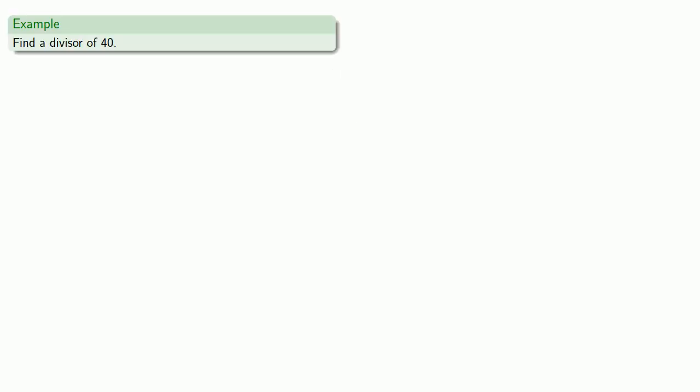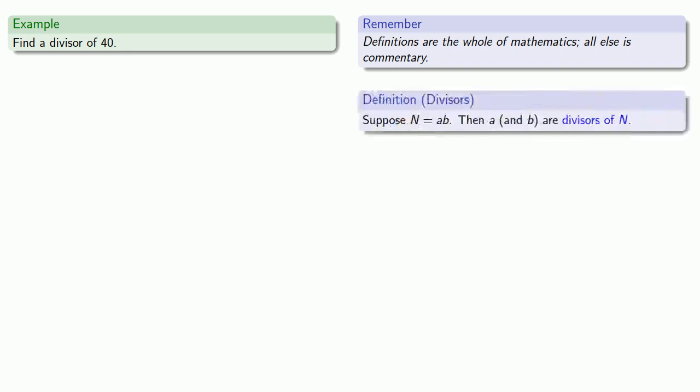So let's say we want to find a divisor of 40. So remember, definitions are the whole of mathematics. All else is commentary. If I want to find a divisor, it helps to know what a divisor is. So we'll pull in that definition. And the idea here is that if I can write a number as a product, then the individual factors are going to be the divisors.